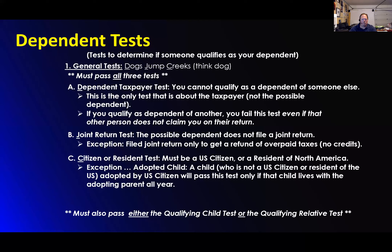Citizenship or residency test: must be a U.S. citizen or a resident of North America. The exception is the adopted child — a child who is not a U.S. citizen or a resident of the U.S., adopted by a U.S. citizen, will pass the test only if that child lives with the adopting parent all year. So in other words, if they live outside the U.S. and are adopted by a U.S. citizen.